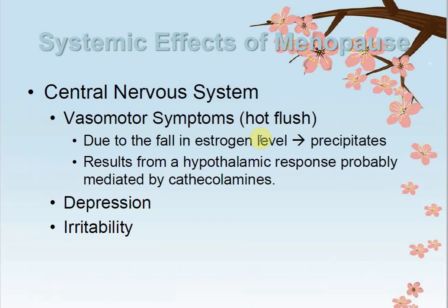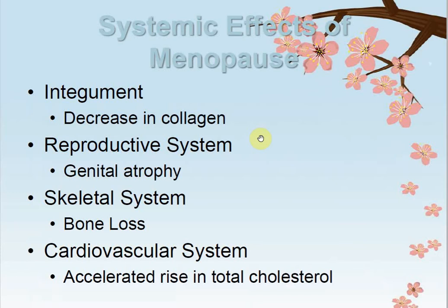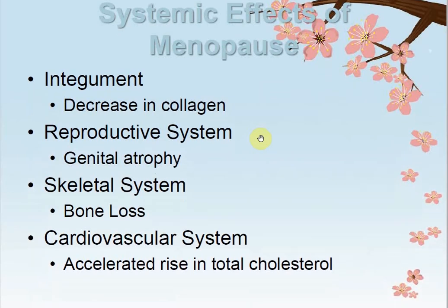Systematic effects on the integumentary system: there is a decrease in collagen in the skin. Skin becomes pigmented and the normal wrinkling process accelerates with the age-wearing process when menopause occurs. In the reproductive system, genital atrophy occurs in the genital areas.